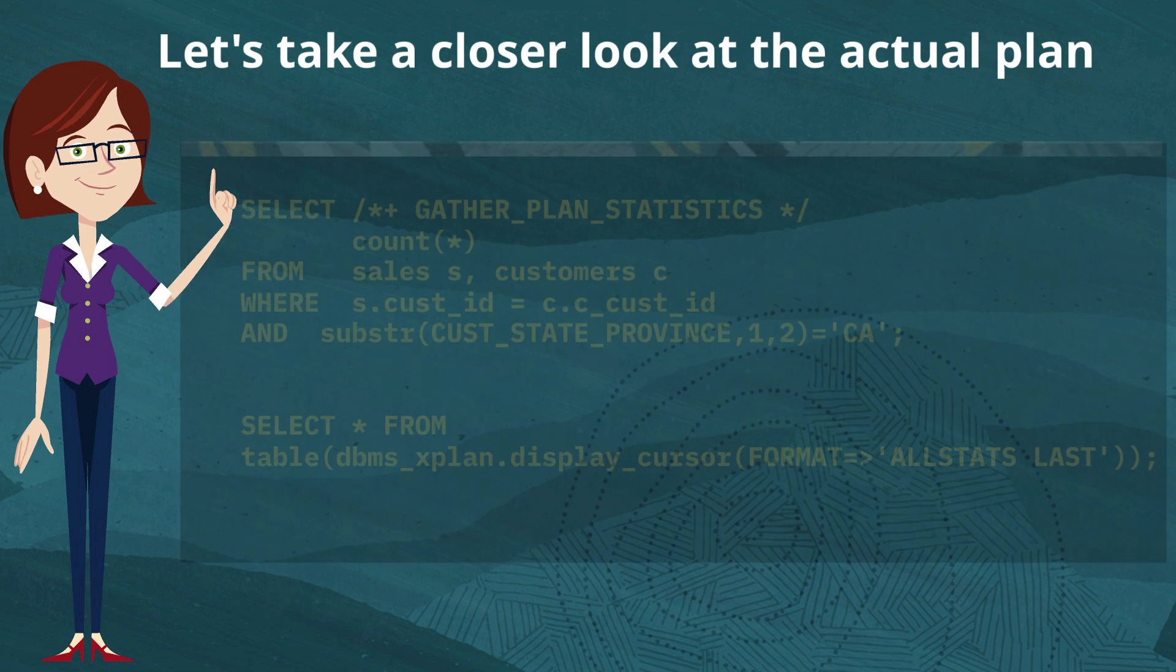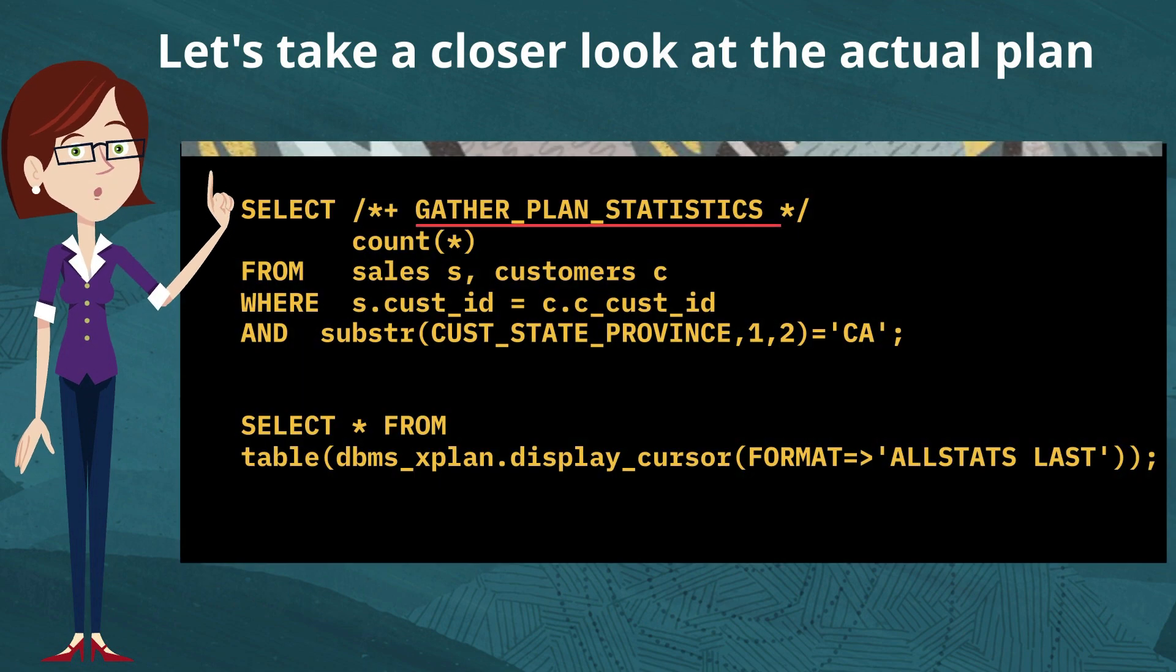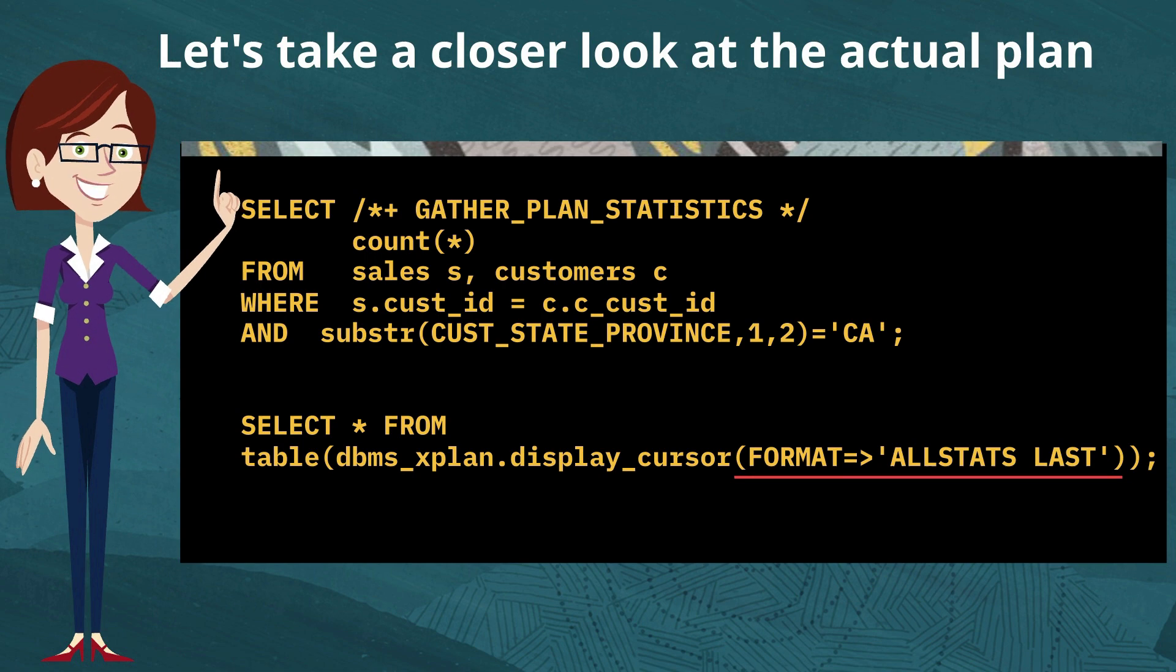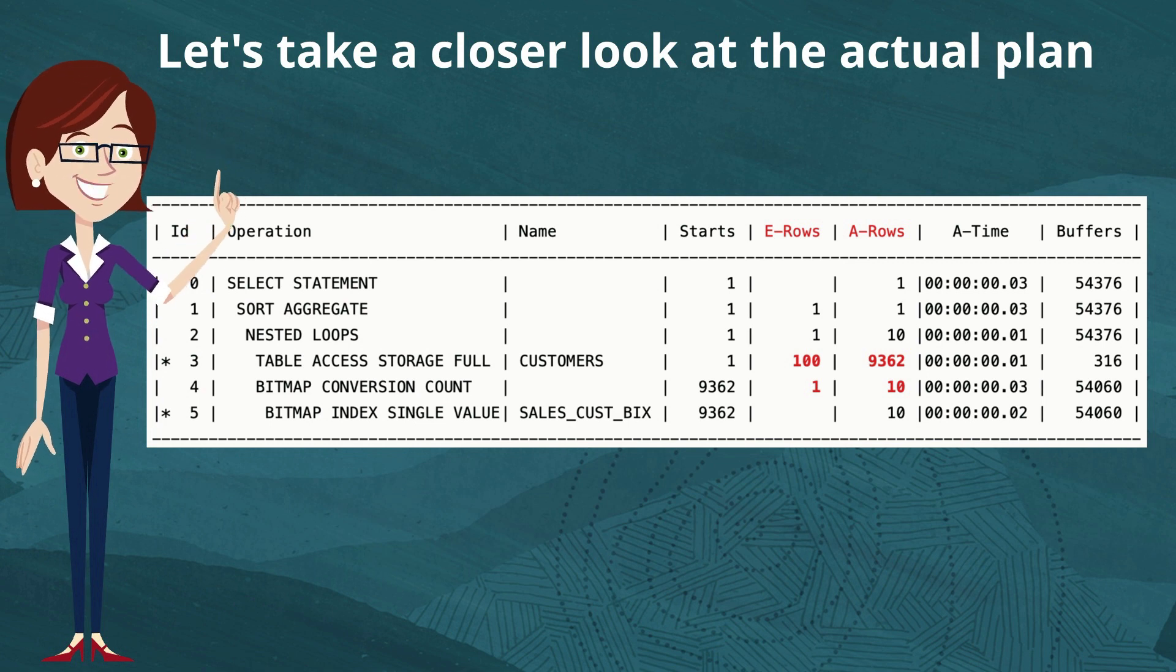Let's take a closer look at the actual plan. I'm going to use the gather plan stats hint in order to get more information about the execution stats. And I'm going to use the additional format parameter, all stats last, so that when I look at the execution plan, I see an E rows and an A rows column.